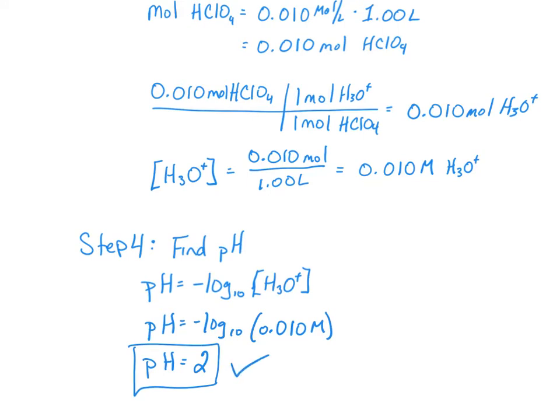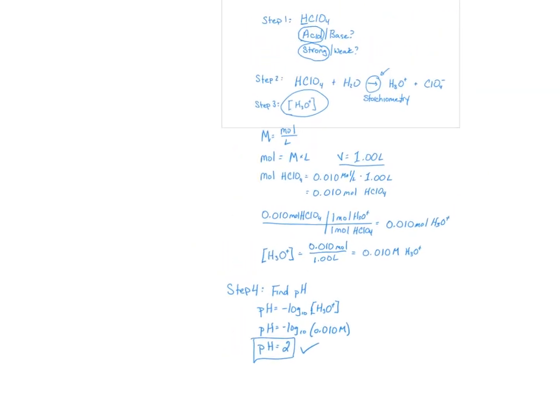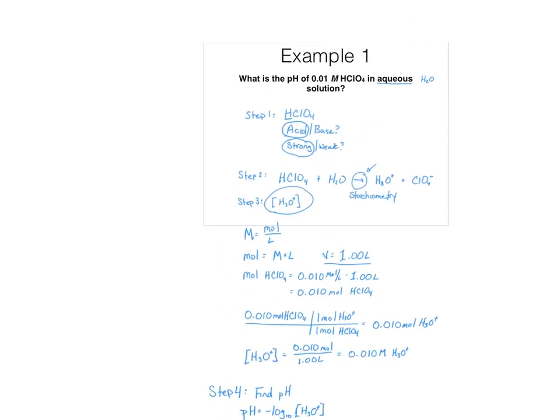And we have now answered the question. So this is how we do it whenever we have a strong acid or a strong base and we have this single arrow situation going on, which means that we get to do stoichiometry. So in the next example, we're going to walk through what happens if we do not have a strong acid.